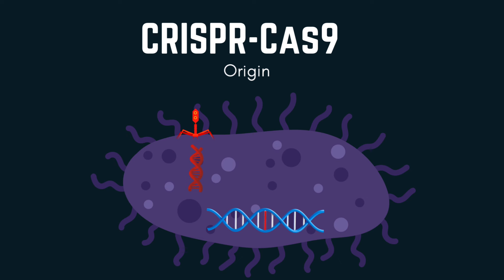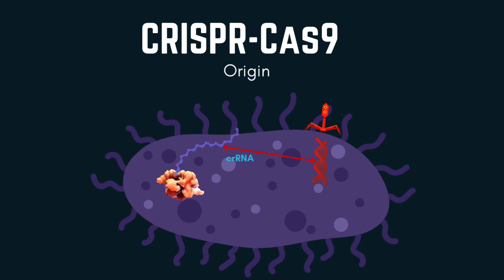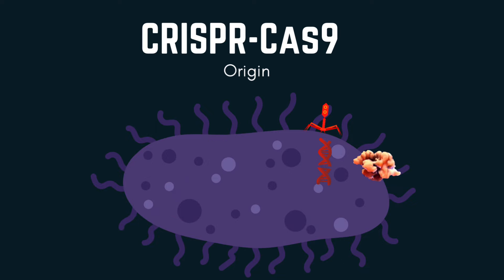This integrated segment is called a spacer. When the bacteria encounter the same virus again, the CRISPR is transcribed into a long RNA molecule, which will be named CRISPR RNAs or crRNAs. crRNA will bind to tracer RNA, then it will guide Cas9 protein to cut the matching sequence on the invading DNA.